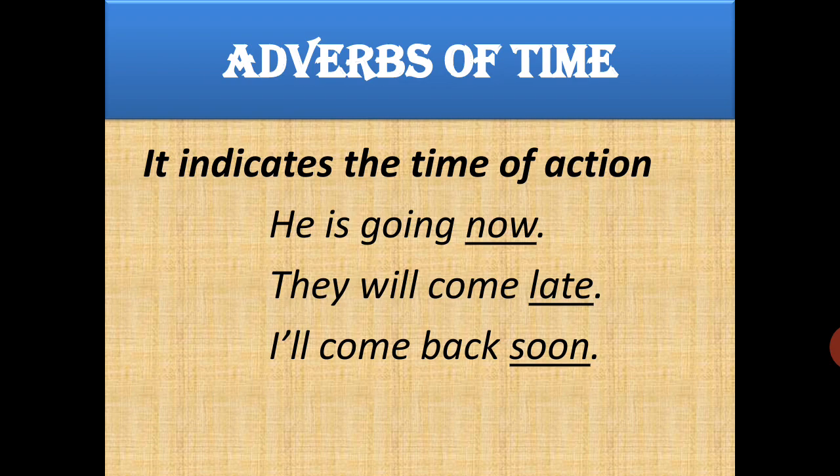First, adverb of time. Time indicates when the action is done — at what time the action in the sentence takes place. For example, 'He is going now.' Going, but when? Now. So 'now' is an adverb of time. 'They will come late.' Come, but when? Late. So 'late' is an adverb of time. 'I'll come back soon.' When? Soon. So 'now', 'late', and 'soon' are adverbs of time because they tell the time of the action.